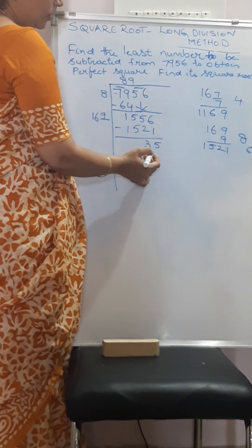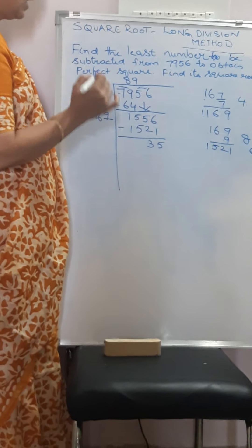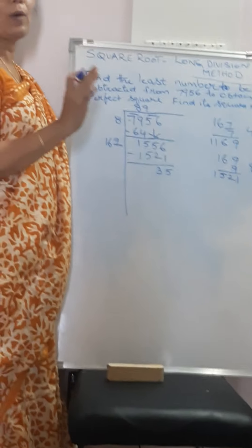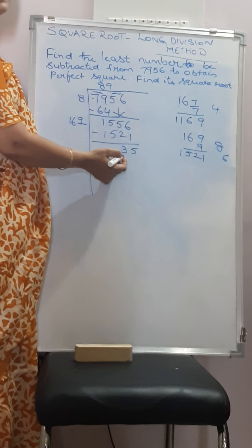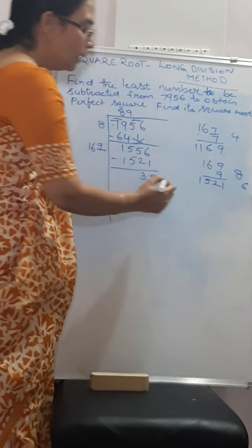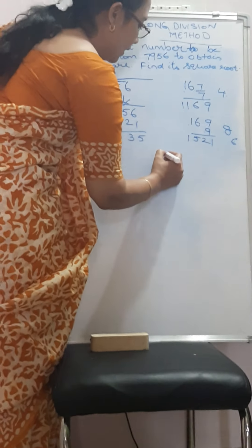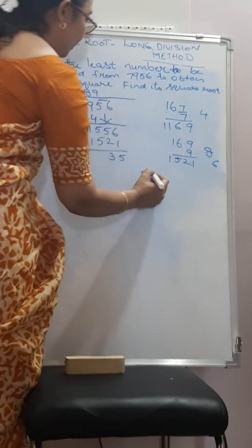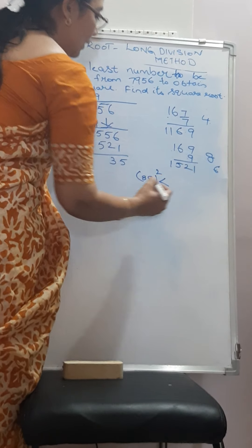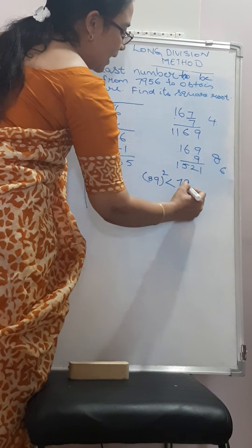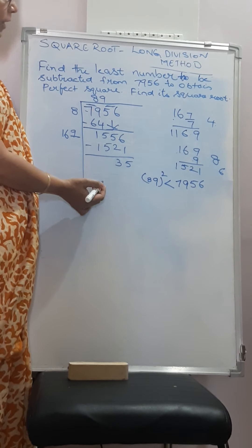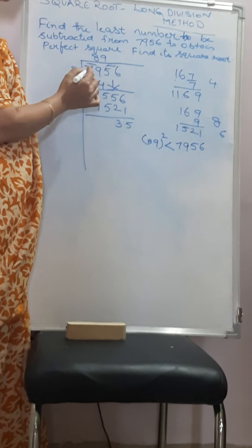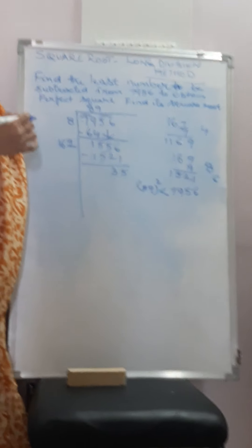So the remainder this time is 35. Now children, always see that when it becomes 0, the quotient will be the square root of that given number. When it doesn't become 0, that means the square root of 89 squared, the square of 89 will be less than 7956. When it becomes 0, the square root of the given number will become the quotient. When it is not, then the square of this number will always be less than 7956.